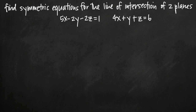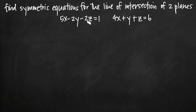Today we're going to be talking about how to find the symmetric equations for the line of intersection between two planes. In this particular problem, we've been given the equations of two planes. One is 5x minus 2y minus 2z equals 1, and the equation of the other plane is 4x plus y plus z equals 6. These two planes intersect each other in a line, and we need to find the equation of that line in symmetric form. To do that, we'll need a vector in the same direction as the line and a point on the line.